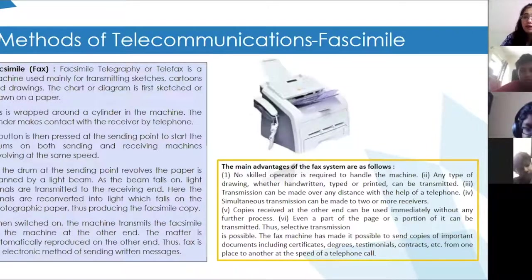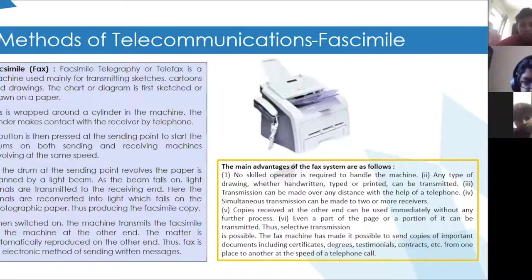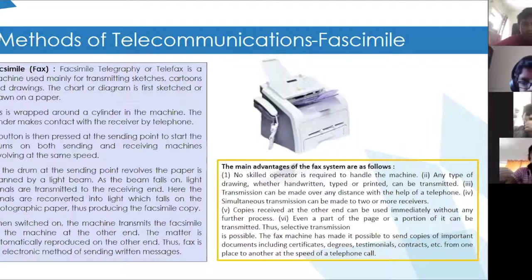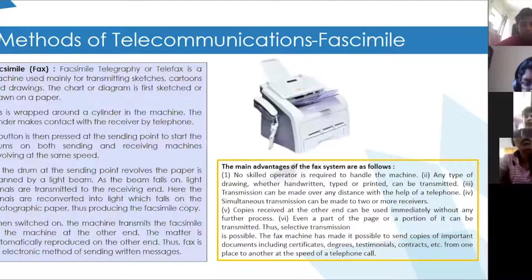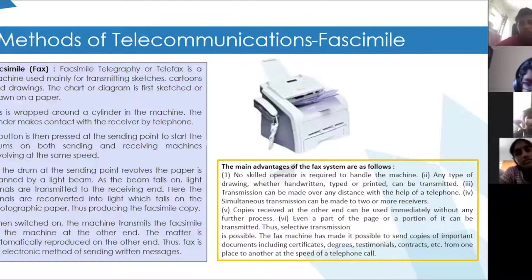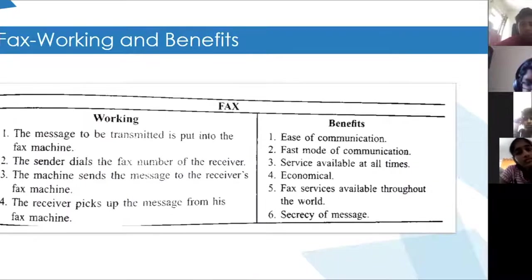Then we learned about the facsimile or the fax machine. How does that work? The fax machine has a wrapped residual cylinder on which there is paper. After the text is written, it is accessed across a laser beam and sent to the other fax machine. It falls on the photographic paper producing the facsimile. Then we saw the video of it and the benefits.